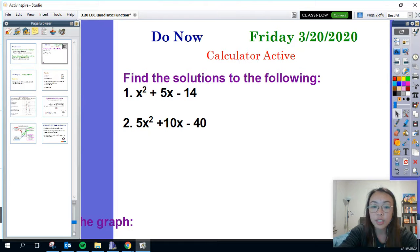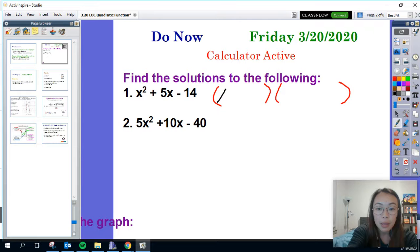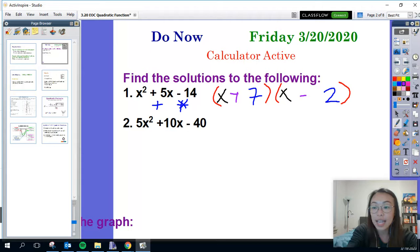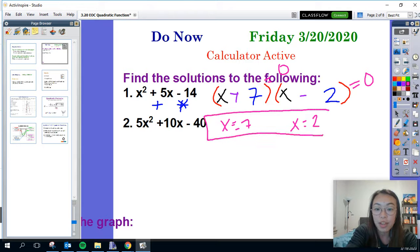For level one, all I need to do is see if I can factor it. So x squared plus 5x minus 14. Is there a number that multiplies to equal negative 14 and adds to equal five? Seven and two. If it's a positive five, it needs to be a positive seven and a negative two. When I set these both equal to zero, my solution is X equals negative seven and X equals positive two.